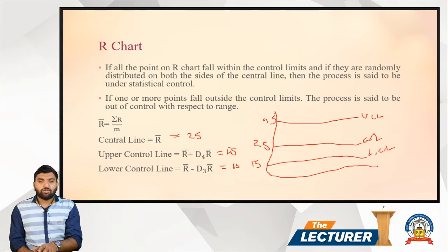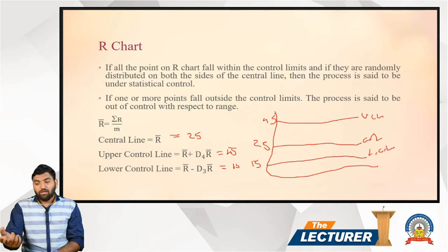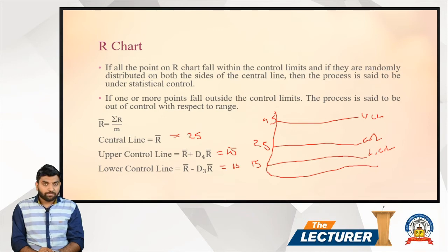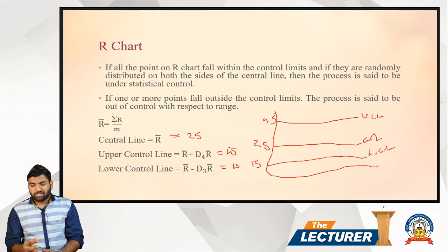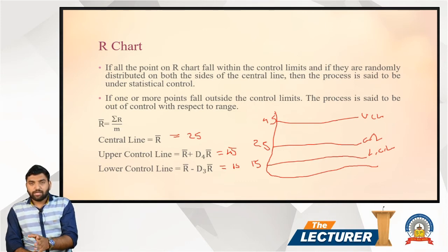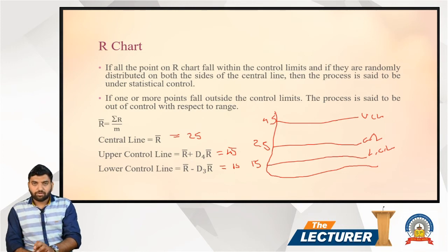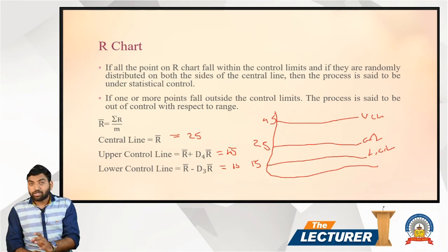The formula for the upper control line of the R chart is R-bar plus D4 times R-bar, and the lower control line is R-bar minus D3 times R-bar. The simple difference between the upper and lower control line formulas is plus or minus, same as in the X-bar chart. For the upper control line you use D4, and for the lower control line you use D3.